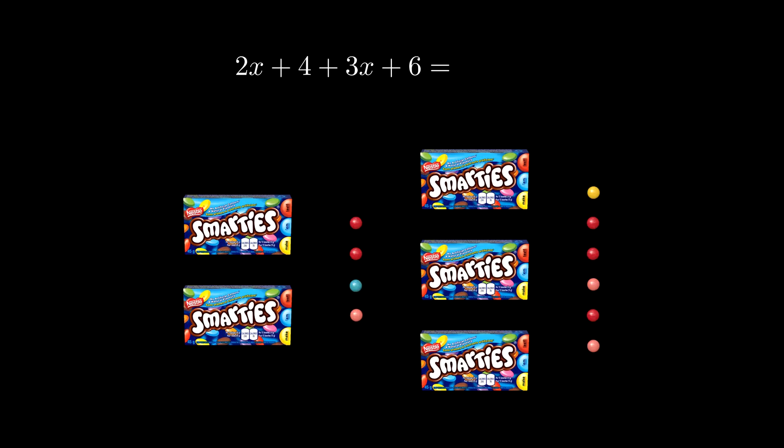Okay, and quite often simplifying is just writing down what you see. Counting everything that you see, and that's all there is to it. It's almost literally just counting. So we can start by only counting how many boxes we have. That would mean how many x's we have.